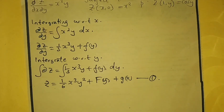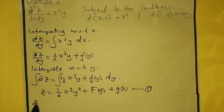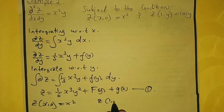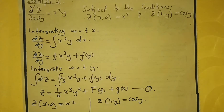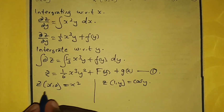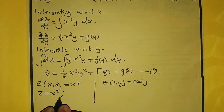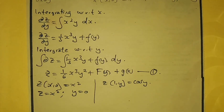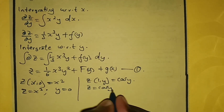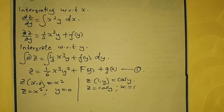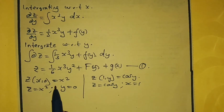We have been given two conditions: z(x, 0) = x² and z(1, y) = cos y. The first condition means z = x² when y = 0. The second condition means z = cos y when x = 1. We apply the first condition in equation number 1.